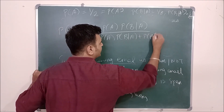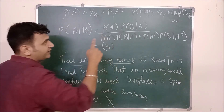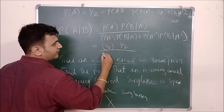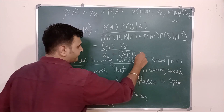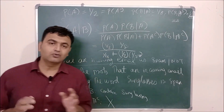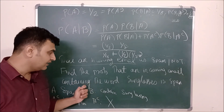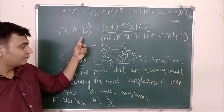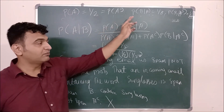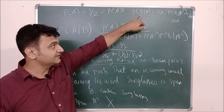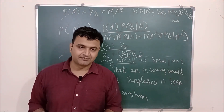Applying Bayes' theorem: P(A|B) = P(A)·P(B|A) / [P(A)·P(B|A) + P(A-complement)·P(B|A-complement)] = (1/2 · 1/8) / (1/2 · 1/8 + 1/2 · 1/50) = (1/16) / (1/16 + 1/100). We had P(B|A) — the probability of containing 'sunglasses' given it's spam — and used Bayes to find the reverse: given it contains 'sunglasses', what is the probability it's spam.